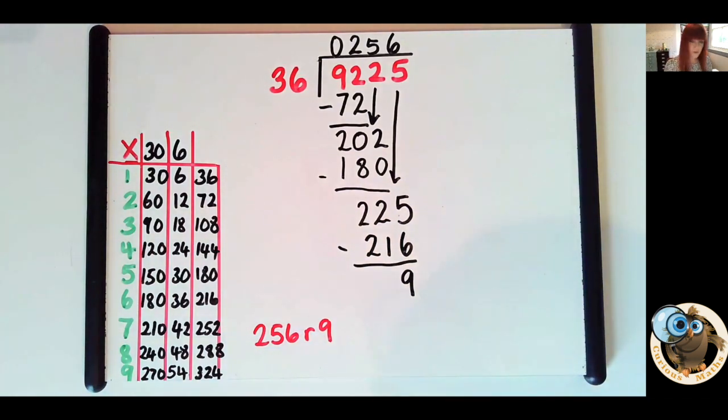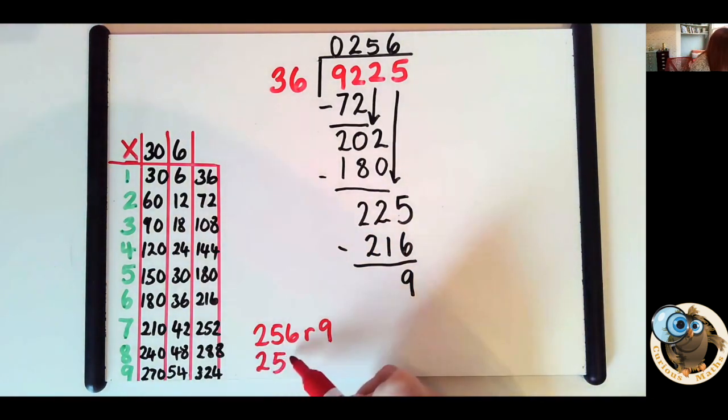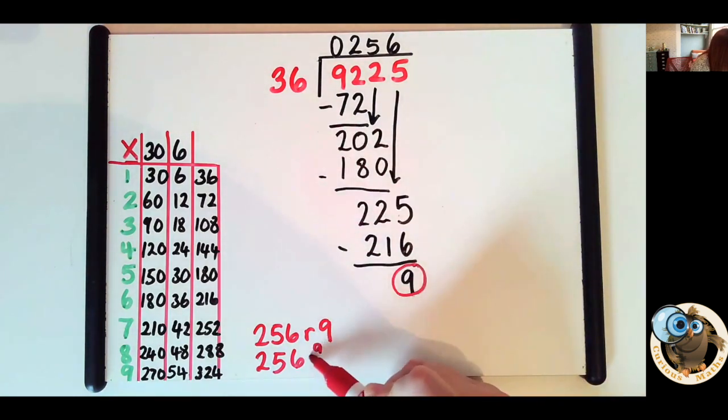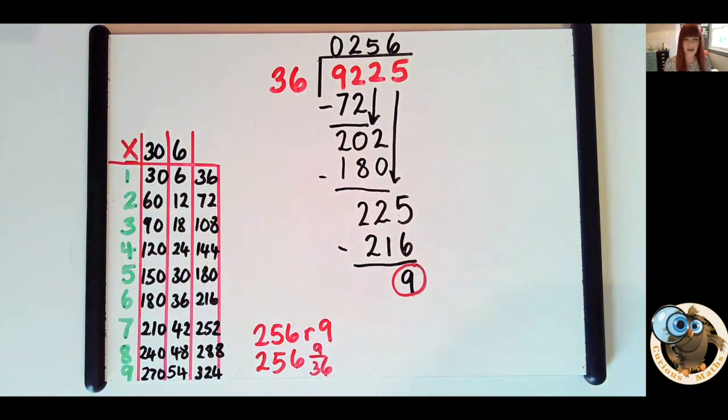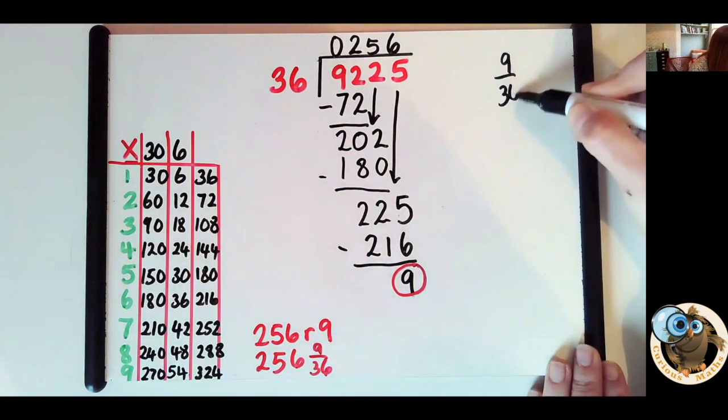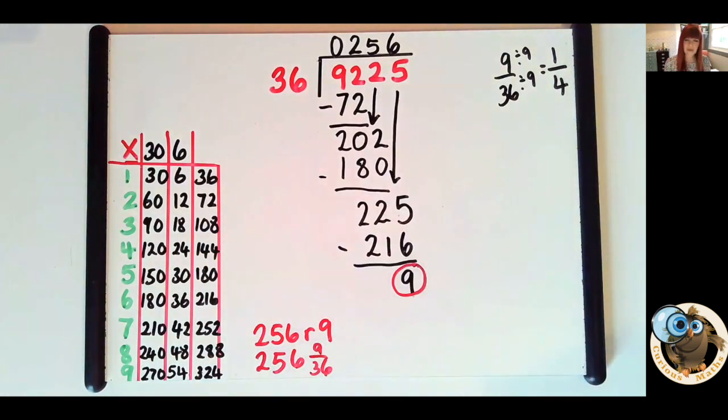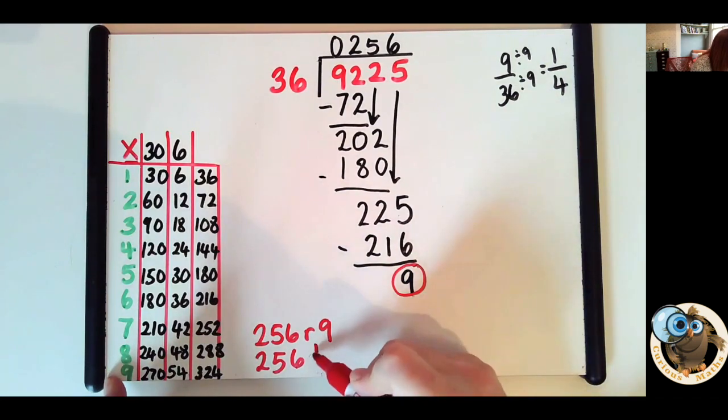And if we need to write a whole number remainder, it will be 256 remainder 9. So if we're going to do a fractional answer, we don't even need to rewrite anything here. We can write it as 256, 9 is our remainder, 9 out of 36. 256 and 9/36. And I can see there that 9/36 can be simplified. I can divide them both by 9, which is equivalent to one quarter. And I'm always going to use the simplified fraction because it's easier for my brain to understand and take the information in. So I will change that now to 256 and a quarter.